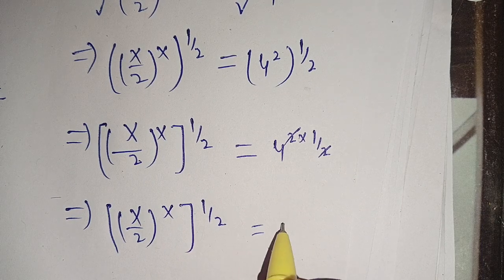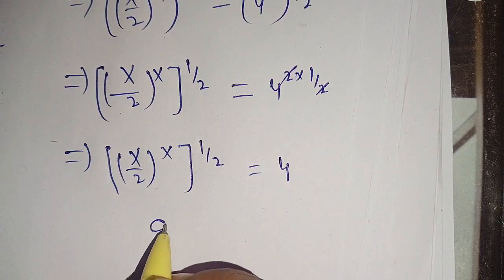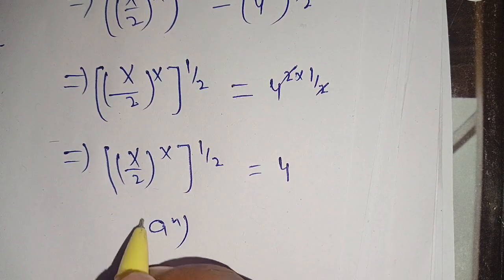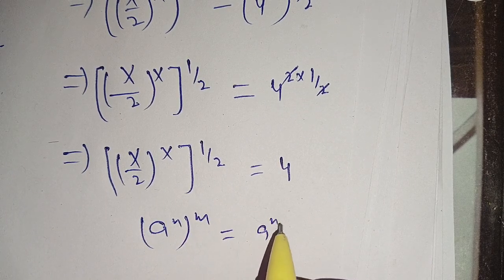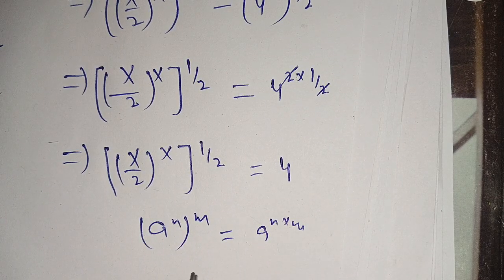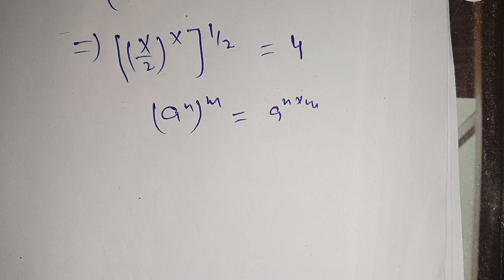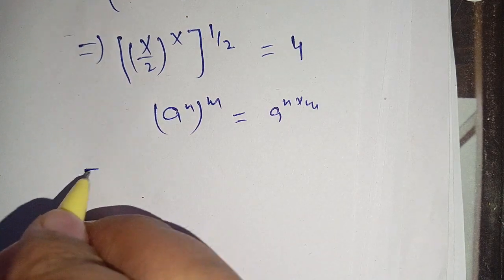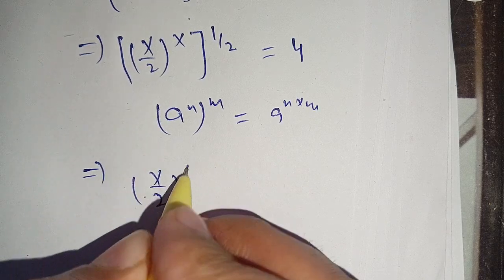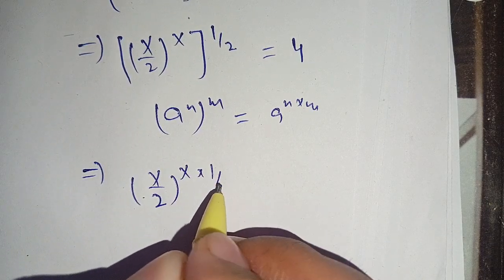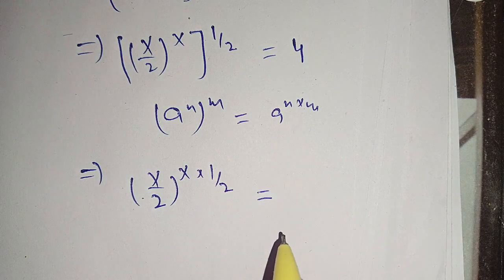We know that (a^n)^m = a^(n·m). Using this identity on the left-hand side, we get (x/2)^(x · 1/2) = (x/2)^(x/2) = 4.